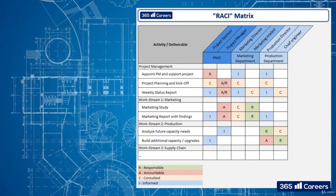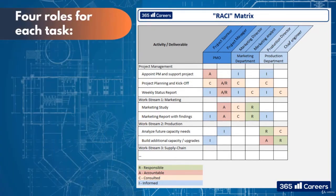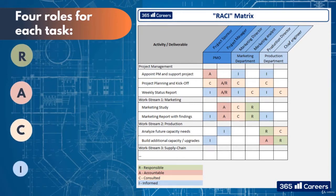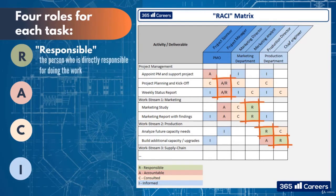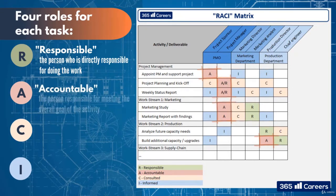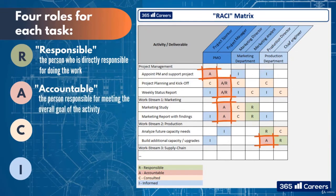According to the matrix, there are four roles for each task: R, A, C, and I. The first is Responsible — the person who is directly responsible for doing the work. The second is Accountable — the person responsible for meeting the overall goal of the activity, with the project manager being accountable for most things.